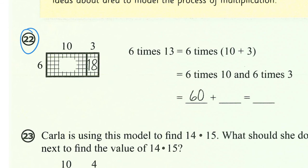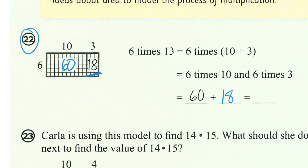Let's go to number 22. We're going to be doing 6 times 13. This distance right here is a total of 13. So I break this up: 6 times 10 is a lot easier, that's 60, and then 6 times 3 is 18. So then I would just add those together to get my total. Over here I have 60 plus 18, that's going to be 78. So 6 times 13 is 78.